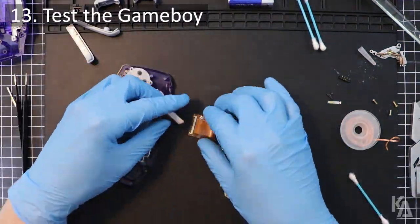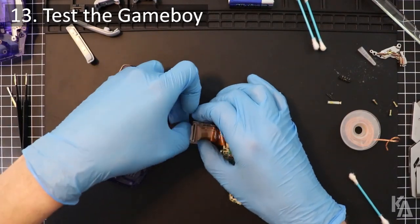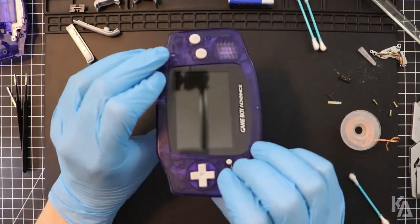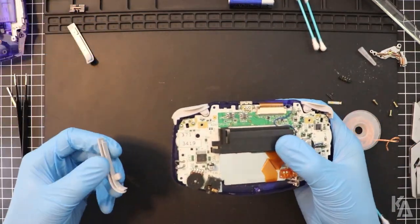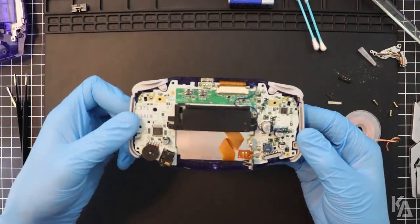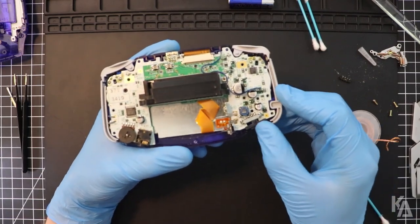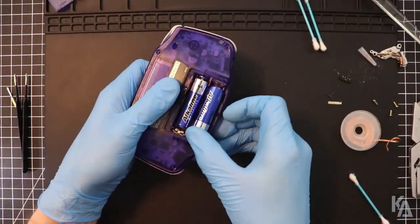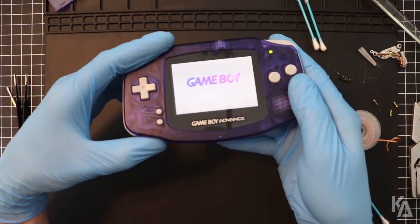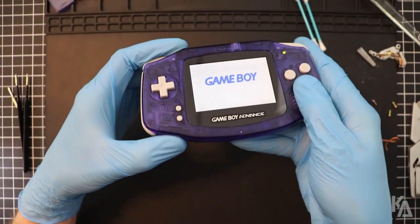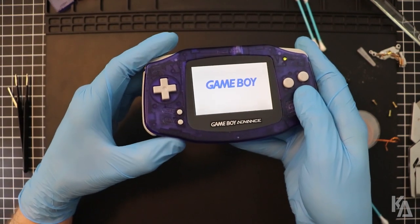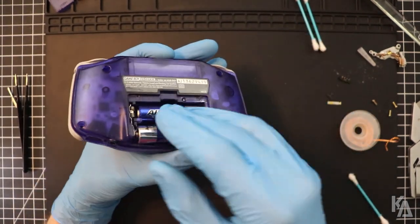Before you close things up for good, test out your system to make sure that it powers on properly. For this process, you don't necessarily need to put any screws back in yet. Just do enough to make sure you can put some batteries in and flip the power switch. On mine, I can see that it works as intended. And as far as I can tell, there is no more power fluctuations when I jiggle the new power switch. Everything turns on and stays on, just as it should. If you've made it this far without incident, close up the rest of the system now, putting back all the screws as you go. Don't forget to put back all of the various plastic pieces and buttons as well.